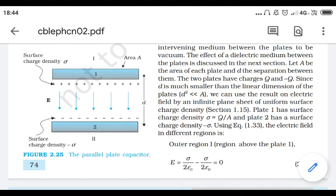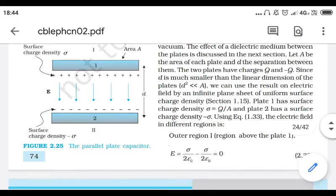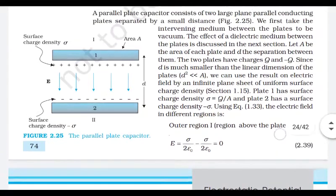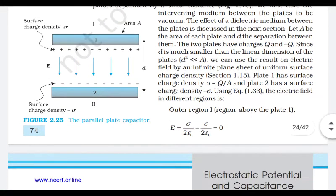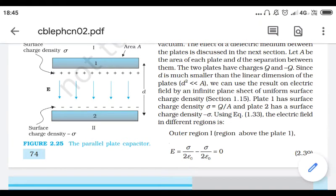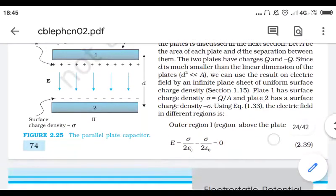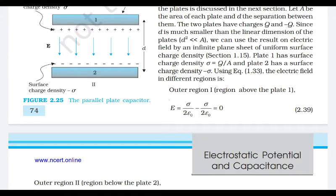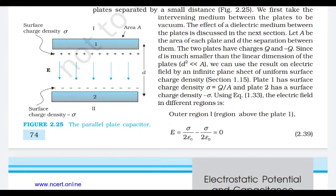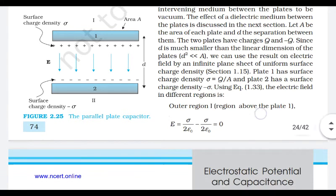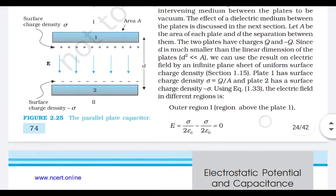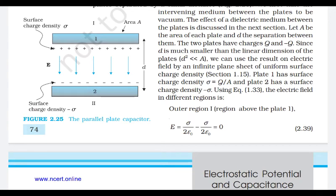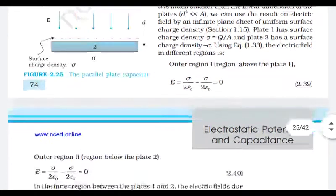So sigma is Q/A and -Q/A for the two plates. In the outer region — the region above plate one — the electric field due to each infinite plate is σ/(2ε₀). The contributions from the two plates cancel, so the net electric field in the outer region one is σ/(2ε₀) - σ/(2ε₀) = 0. Similarly, in outer region two, the field is also zero.